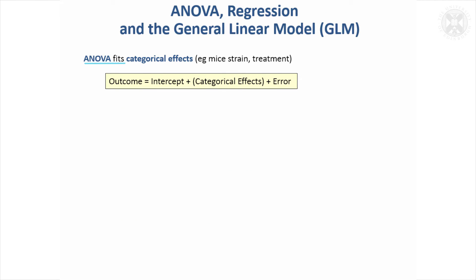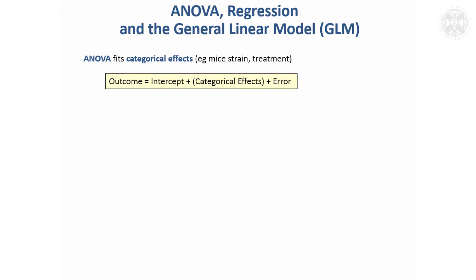With ANOVA you're fitting categorical effects — you're fitting groupings to your data. The model could be written with an intercept term, one or more categorical effects, and an error term.